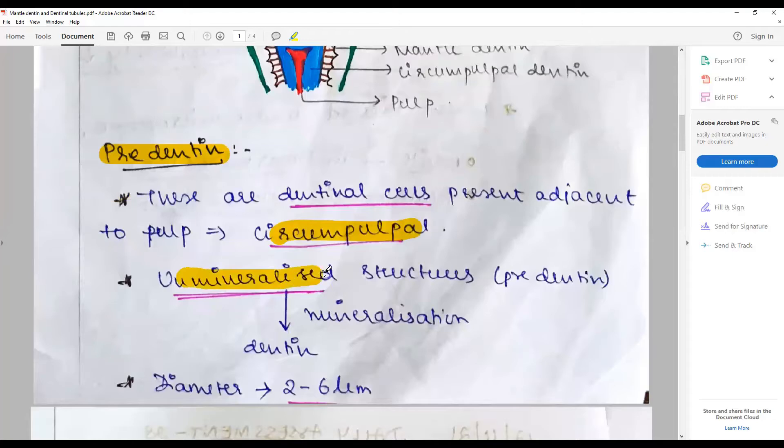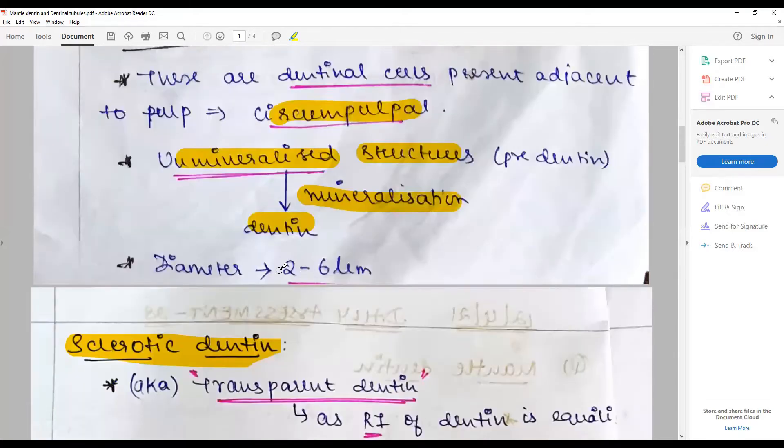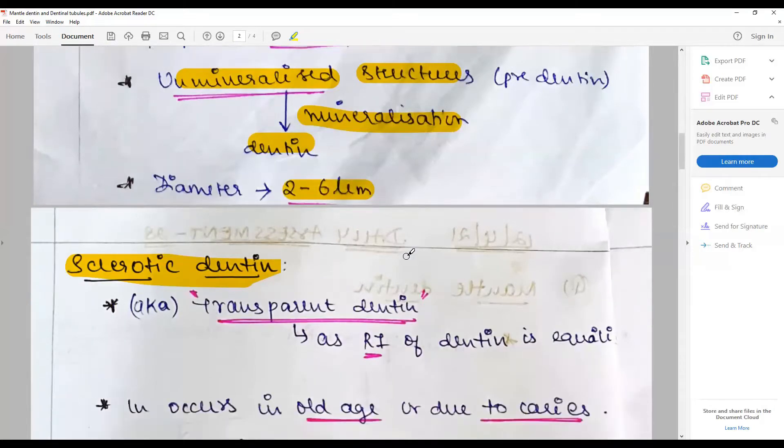That is a part of the circumpulpal dentine. They are unmineralized structures. With pre-mineralization, they become dentine. The diameter or the thickness can be about 2 to 6 micrometers depending upon the phase.